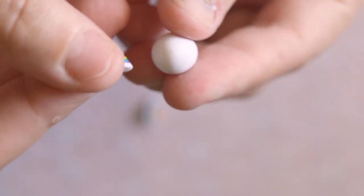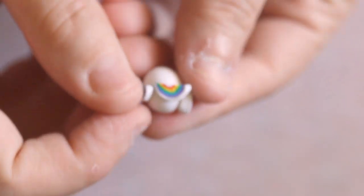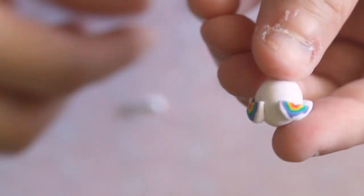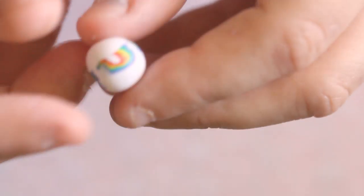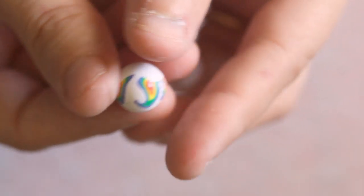Now with your half pieces, you're going to start sticking them around your ball, just like this. Now roll it into a ball, and now you're going to have rainbows going around your whole bead.